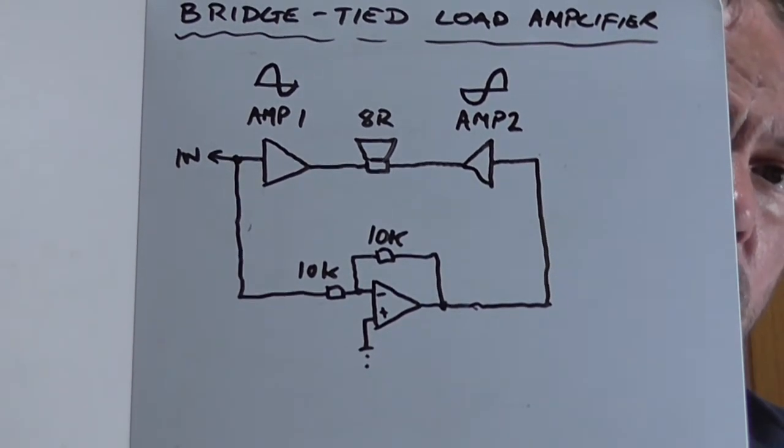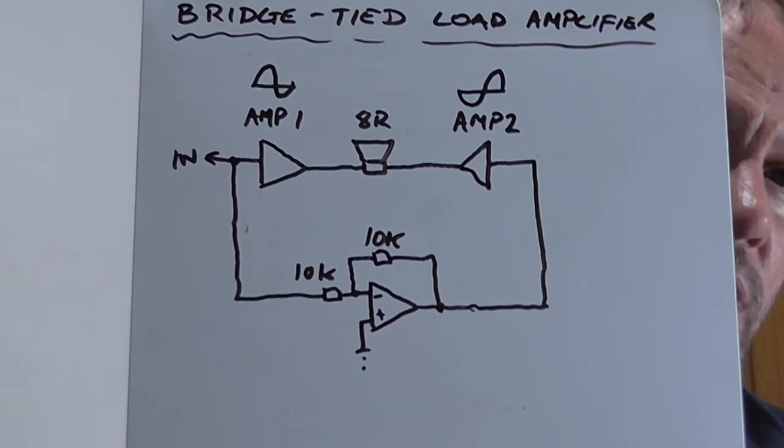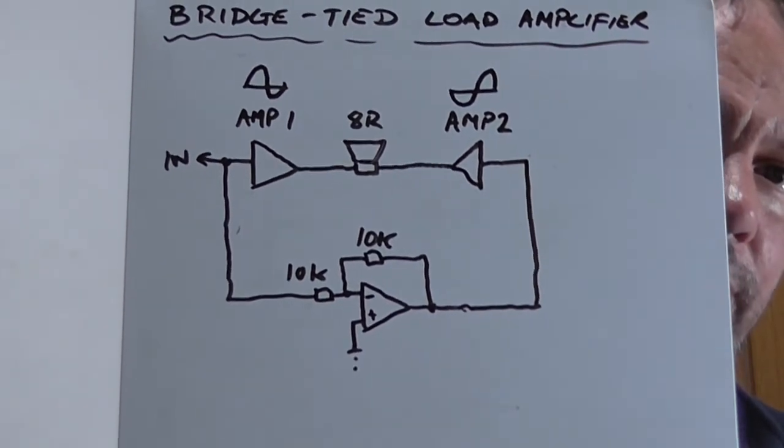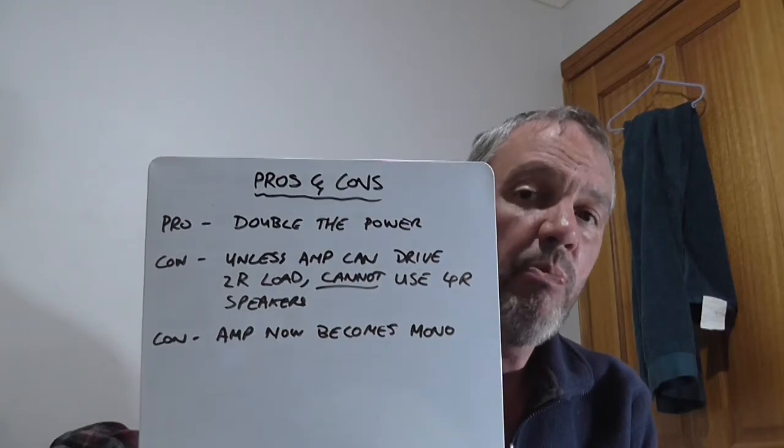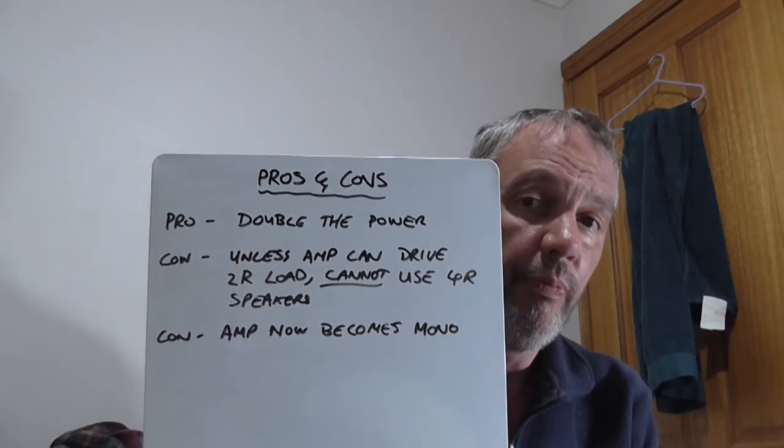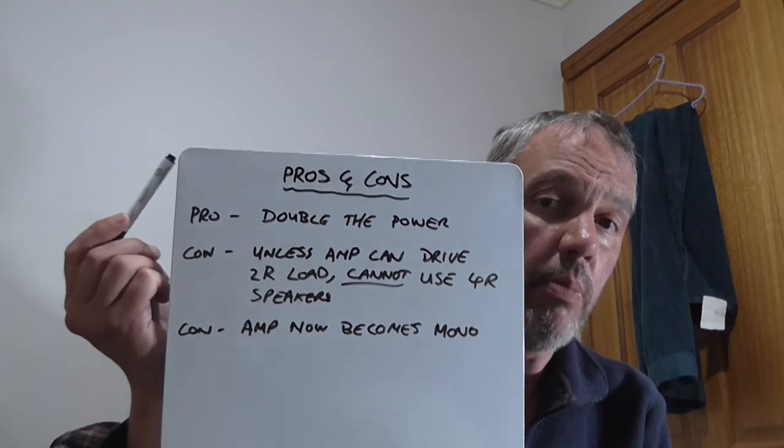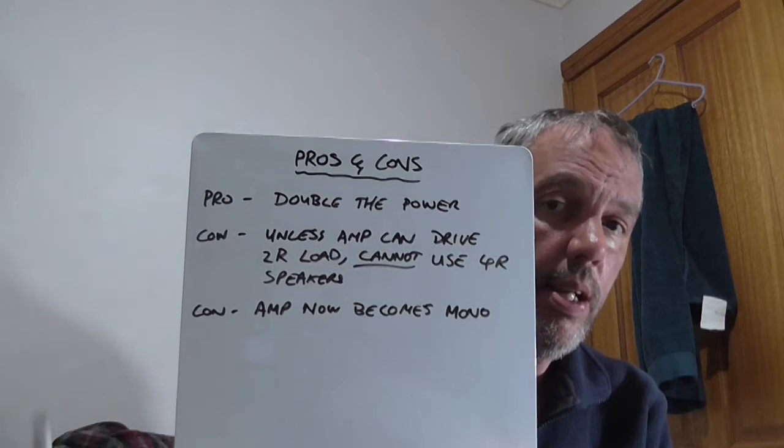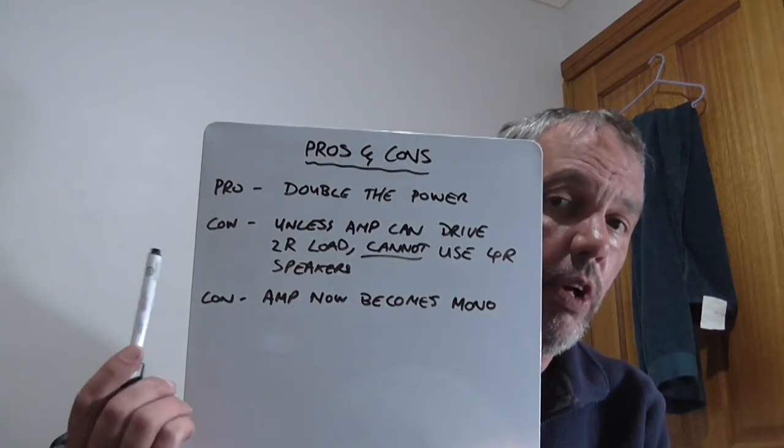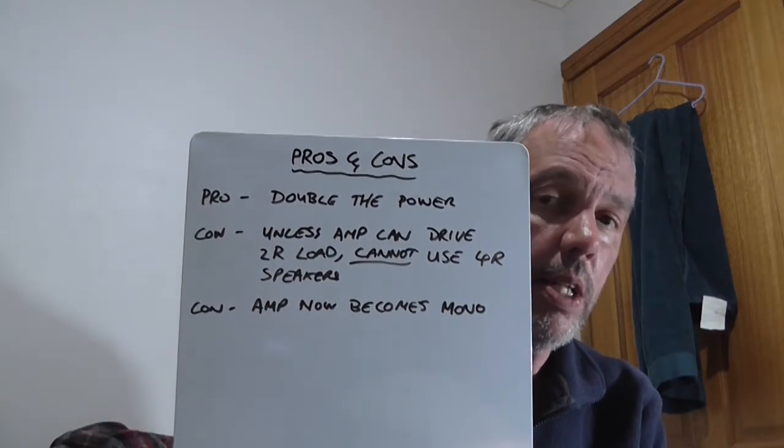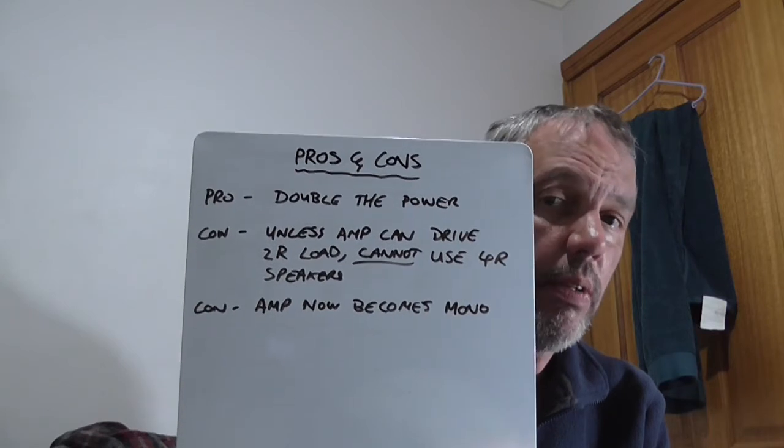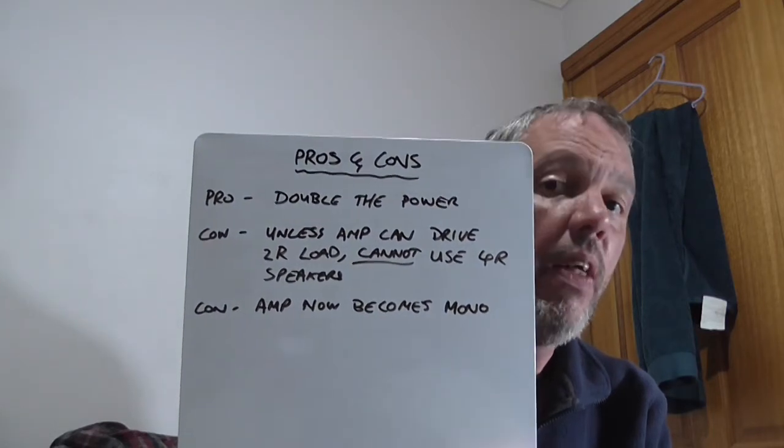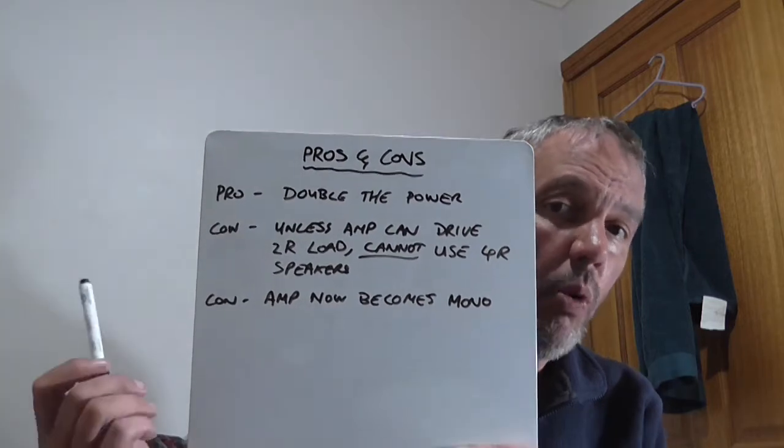You could use a non-inverting buffer for the first amp if you wish but I don't see the need. And so we're just going to look at a couple of pros and cons here. One of the pros is you get double the output power from your stereo amplifier. However two of the cons for that is unless the amplifier can drive two ohm loads as previously explained you cannot and I mean cannot use four ohm loudspeakers. They have to be eight ohms or more.